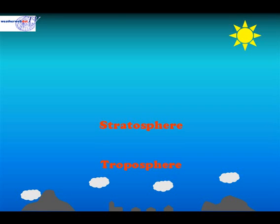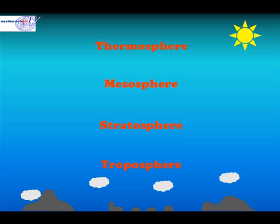Next is the stratosphere. At the very top of the stratosphere we find the ozone layer. Next is the mesosphere, with the highest level being the thermosphere. It's in the thermosphere that the space shuttle flies.